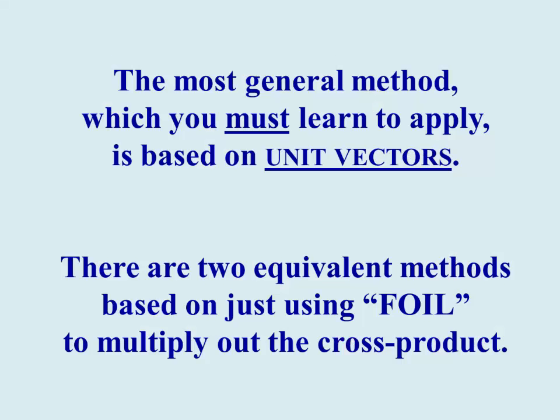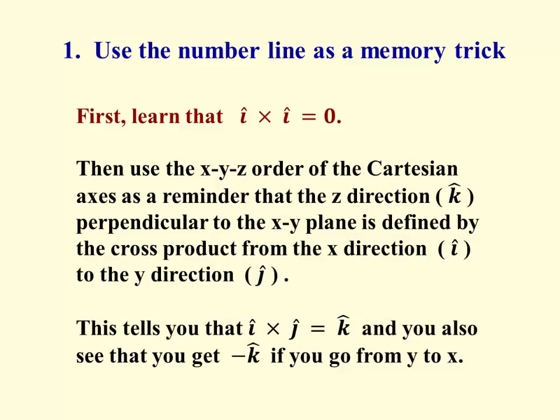Now, the most general method, one that uses unit vectors, is one that you need to learn to apply in my class for Physics 2, and that you definitely need to learn by the time you get into engineering mechanics. There are two equivalent methods based on just multiplying out the cross product. The first one uses the number line as a memory trick. You have to learn that I cross I is zero. Parallel vectors give you zero. And then you can use the XYZ order of the Cartesian axes as a reminder that X crossed with Y gives you Z. That is, that I cross J gives you K.